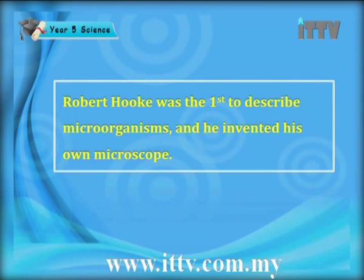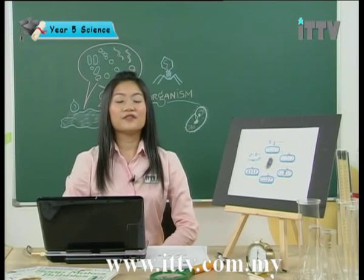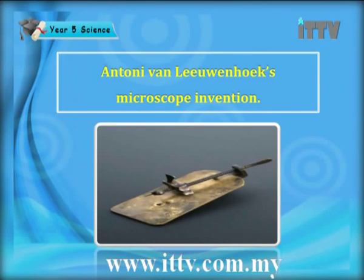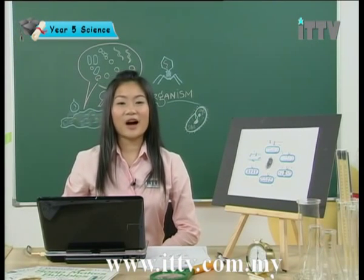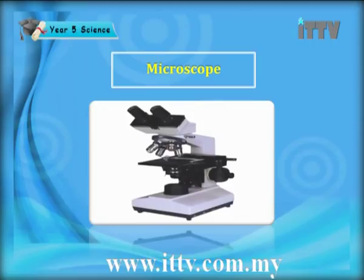Robert Hooke was the first to describe microorganisms, and he invented his own microscope. This is a drawing of the microscope used by Robert Hooke in the year 1664. However, the first person who ever saw bacteria was Antony van Leeuwenhoek. The microscope now obviously does not look like that anymore — it looks more sophisticated, like this example of one of the various types of microscope.